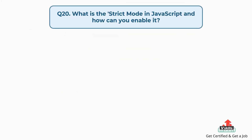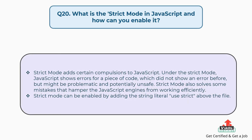Question number twenty: what is strict mode in JavaScript and how can you enable it? Strict mode adds certain compulsions to JavaScript. Under strict mode, JavaScript shows errors for a piece of code which did not show an error before but might be problematic and potentially unsafe. Strict mode also solves some mistakes that hamper the JavaScript engines from working efficiently. Strict mode can be enabled by adding the string literal 'use strict' above the file.